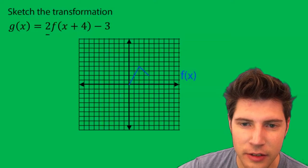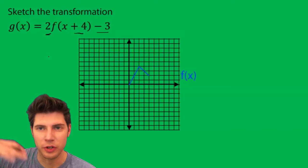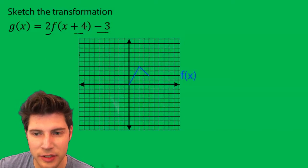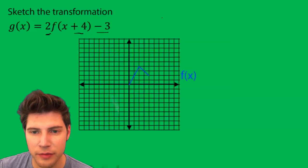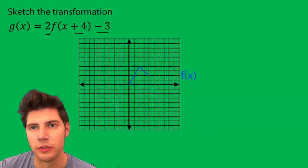So what we have is a 2 on the outside, and then this plus 4 and this minus 3. So the 2 on the outside is a vertical dilation. It's going to make it twice as tall, and we're going to do that first. These two are translations. After we make it twice as tall, we're just going to move our graph.